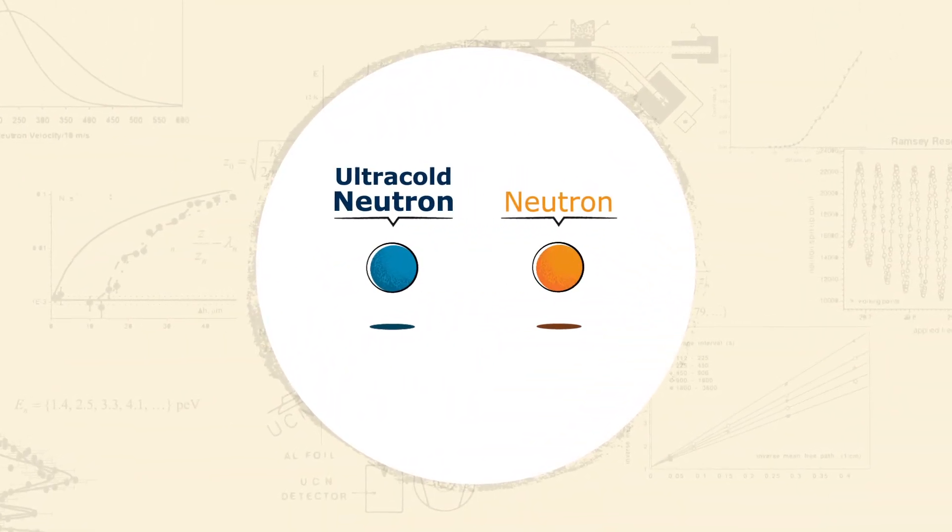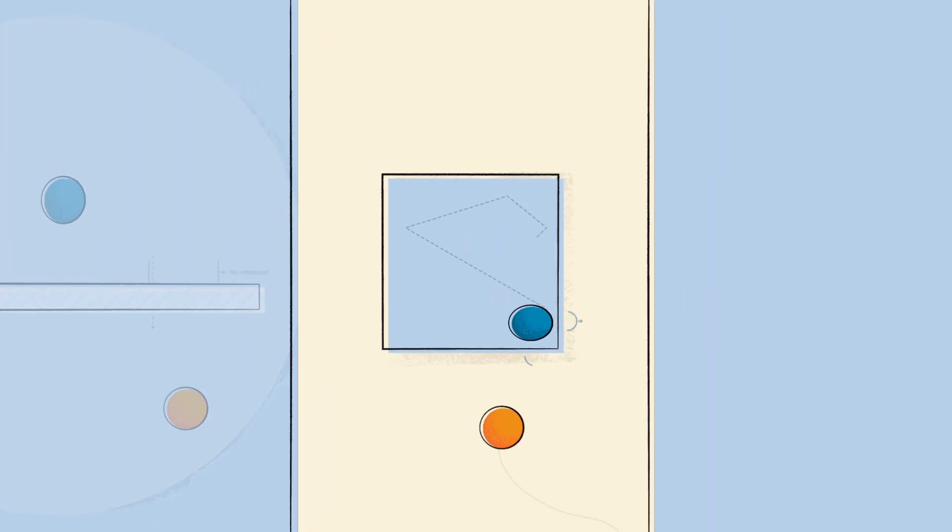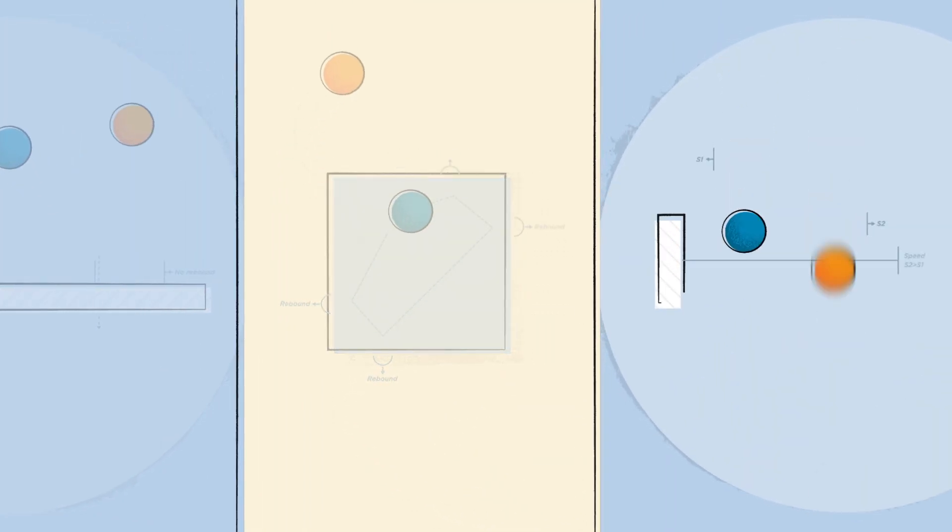A neutron with low energy, capable of bouncing off matter, and therefore of being stored and observed over long periods.